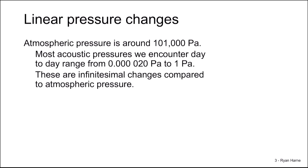It's important to consider some of the acoustic pressure data points compared to atmospheric pressure. Atmospheric pressure is around 101 kPa, or 101,000 pascals, where pascals equals newtons per meter squared. Most day-to-day acoustic pressures that we encounter range from about 20 micropascals to 1 pascal.